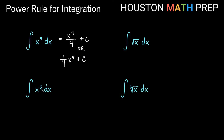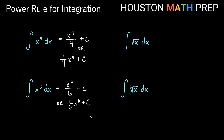The integral of x to the fifth dx: our power goes up by one, giving us x to the sixth divided by the new power, which is six, plus our constant of integration. Or if you prefer, you can write one-sixth x to the sixth plus c. Either of those are fine.